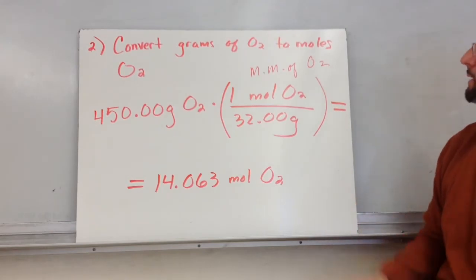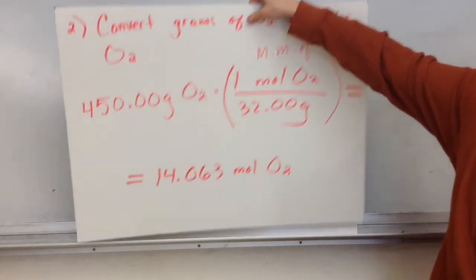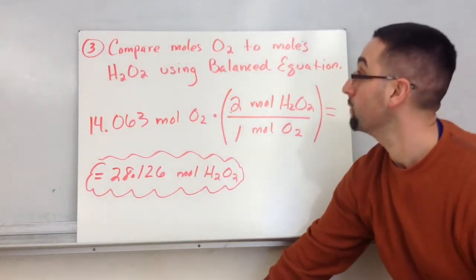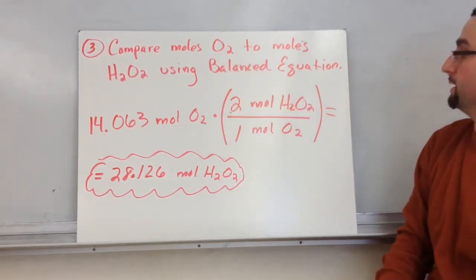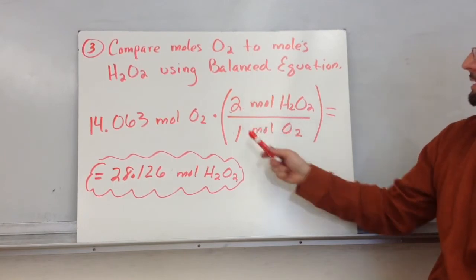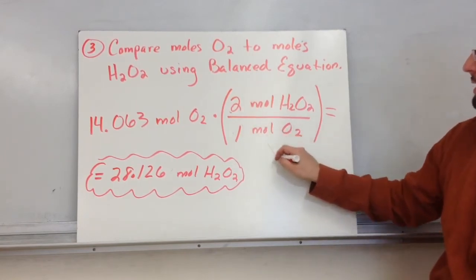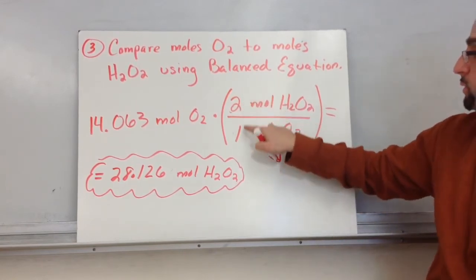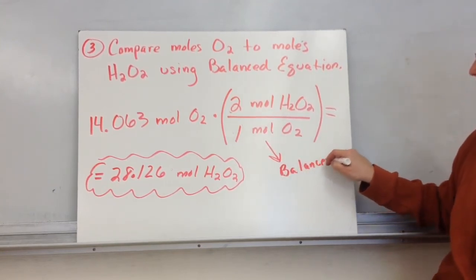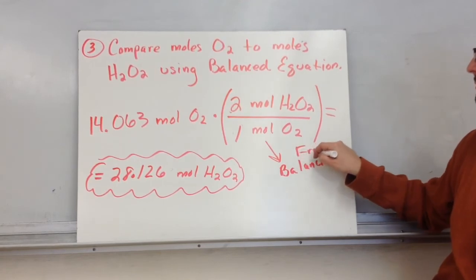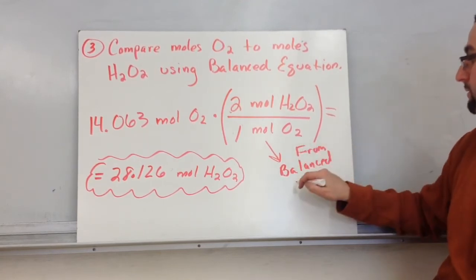Our next step, we're going to make the jump between oxygen and hydrogen peroxide, and the only way I can do that is from my balanced equation. So I got these two and one coefficients. I got this from the balanced equation.